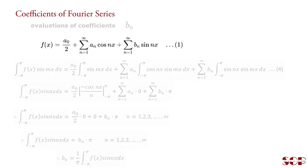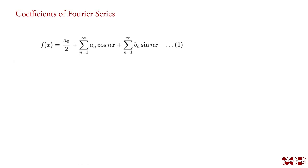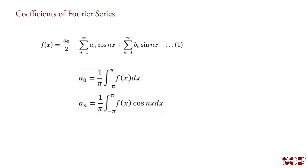In conclusion, for a given Fourier series the coefficients a₀, aₙ, and bₙ are given by the derived formulas. In the next video we will learn about cosine and sine series. Please write your suggestions in the comment section, like and share the video, and subscribe to my YouTube channel School of Physics. Thanks.